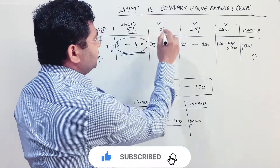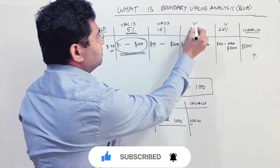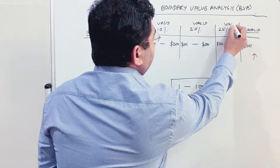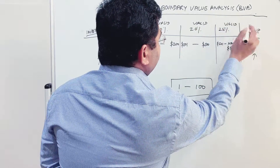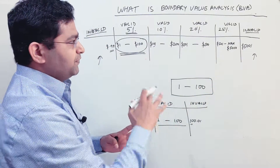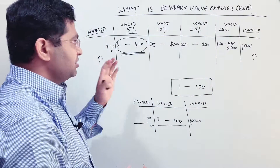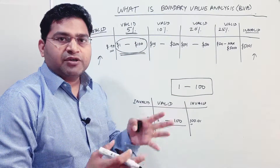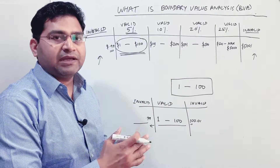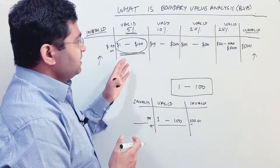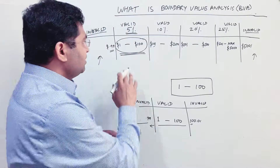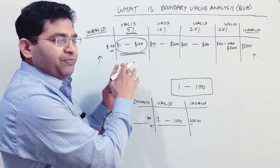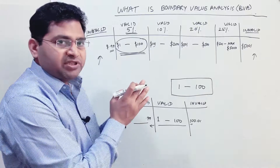These were the four valid partitions — and here the invalid one: above five thousand one dollar should not be allowed to purchase. These are the discount purchases that a particular website is offering, and we are going to test it.